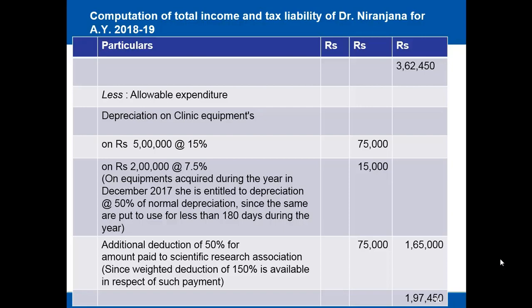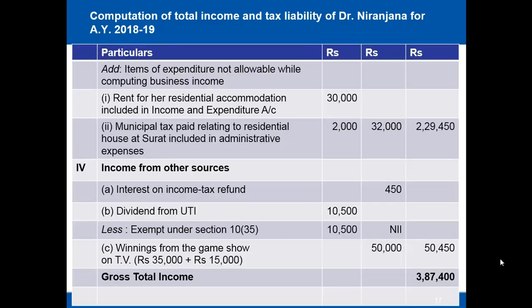Certain expenditures are not allowable: rent for residential accommodation included in the income and expenditure account is rupees 30,000, and municipal taxes of rupees 2,000 relating to the residential house in Surat included in administrative expenses are also disallowed. Total disallowed expenses are rupees 32,000, making income from profession or business rupees 2 lakh 29 thousand 450.